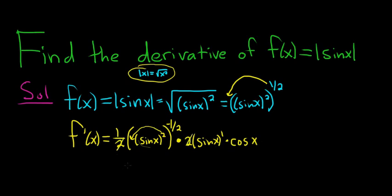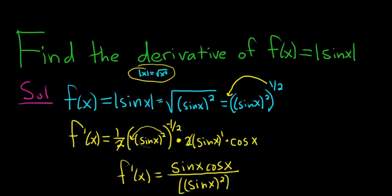The 2's cancel. So we end up with f prime of x equals, looks like we're left with sine x cosine x up top. So sine x cosine x. Then on the bottom, we can bring this guy downstairs and the exponent will become positive. So it will be sine x quantity squared to the 1 half. Now we can go ahead and write that 1 half power again as a square root. So this becomes the square root of sine x quantity squared.